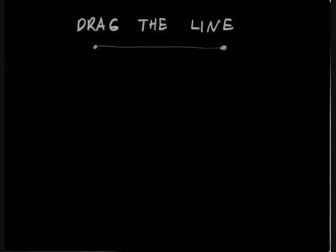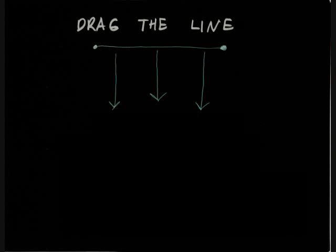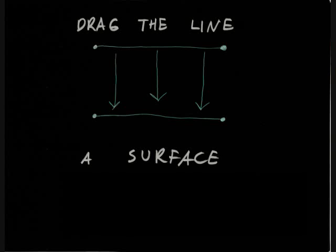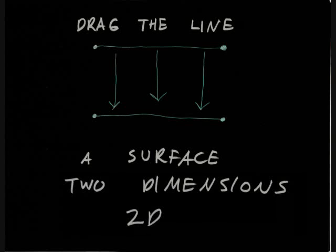If we drag the line perpendicular to itself, that is, at a 90-degree angle to itself, we'll get a plane or surface. This surface has length and width, but no height. It is two-dimensional, and has two directions: back and forth and side to side.